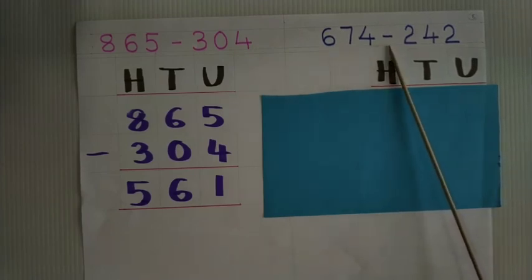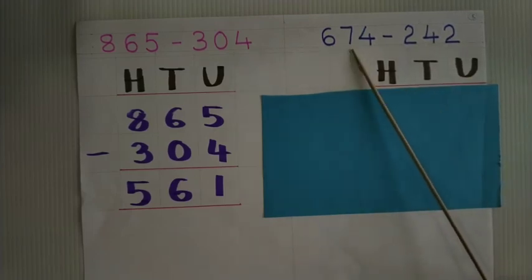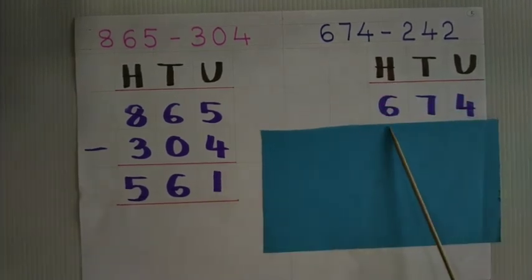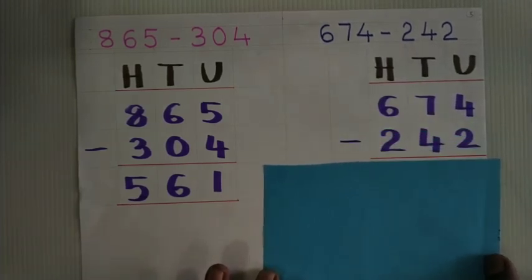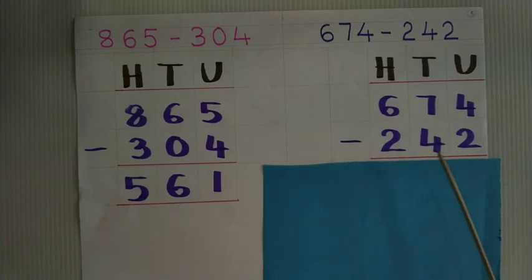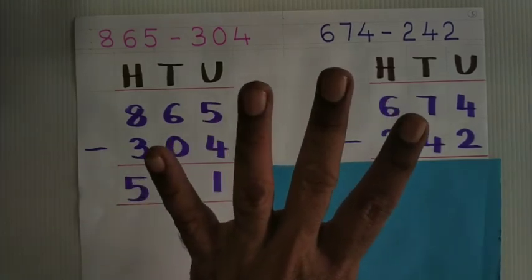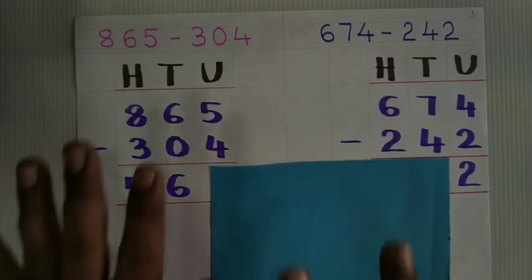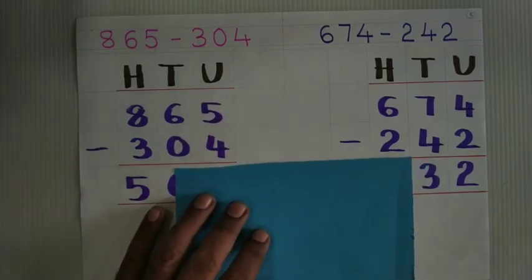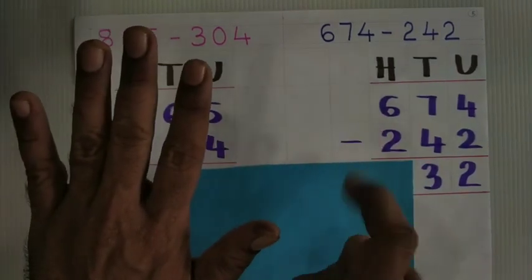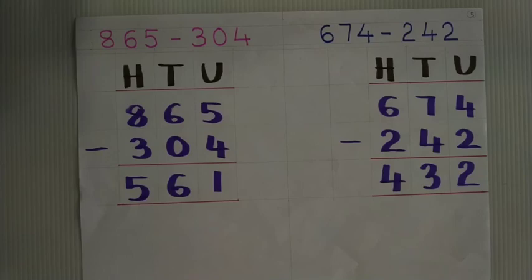674 minus 242. First write 674, then minus 242. 4 units minus 2 units is 2. 7 tens minus 4 tens is 3. 6 hundreds minus 2 hundreds is 4. Four hundred and thirty-two is the answer.